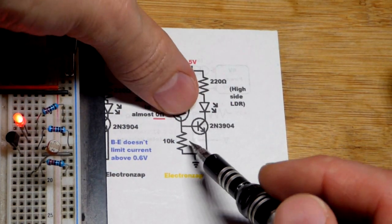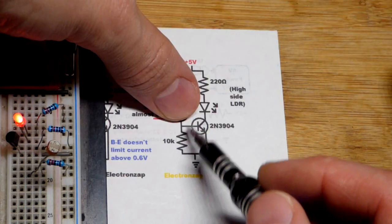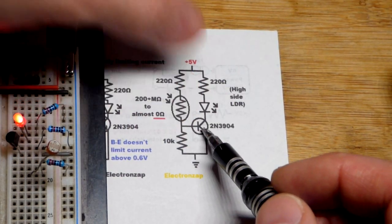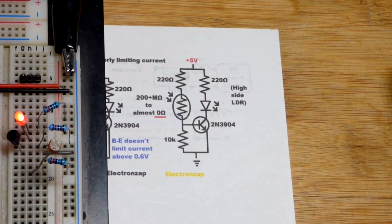We have to get it pretty dark right there to drop below 0.6 volts right there. It's a voltage divider, and that will ultimately turn the transistor off. So, we have to get this circuit pretty dark to get the transistor to turn off.